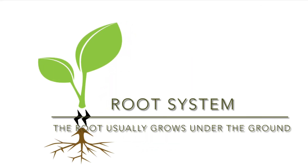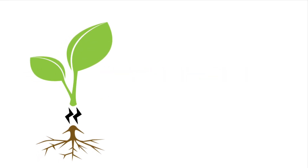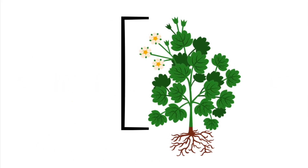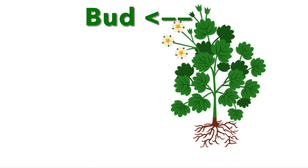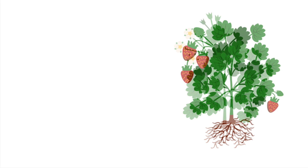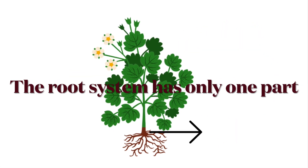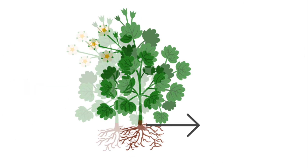The root usually grows under the ground while the shoot grows above the ground. The shoot system includes stem, leaf, bud, flower, and fruit. While the root system has only one part — that is root.